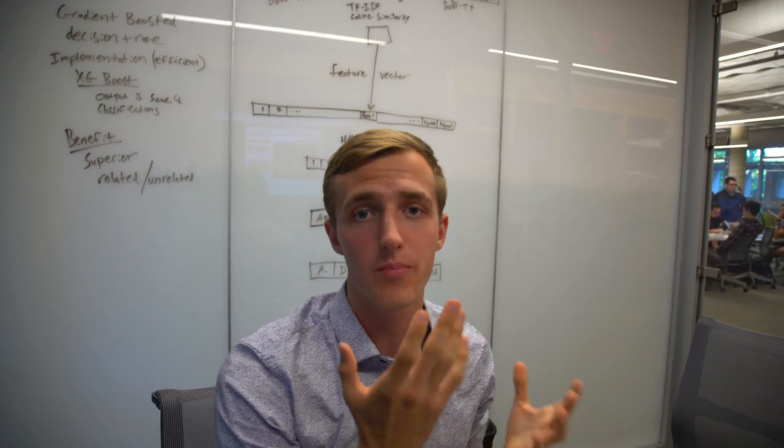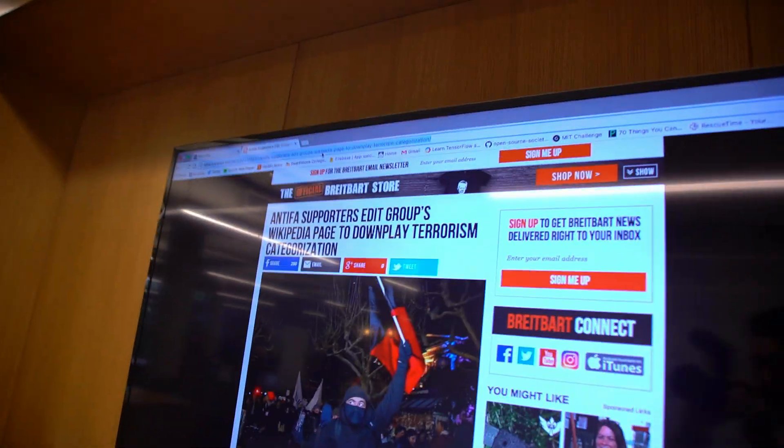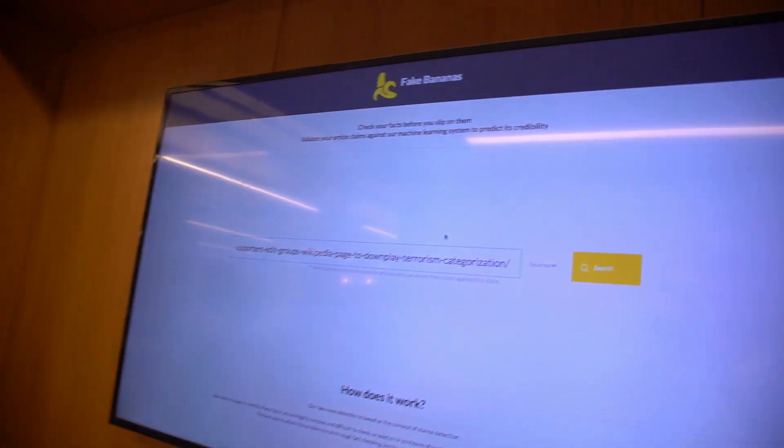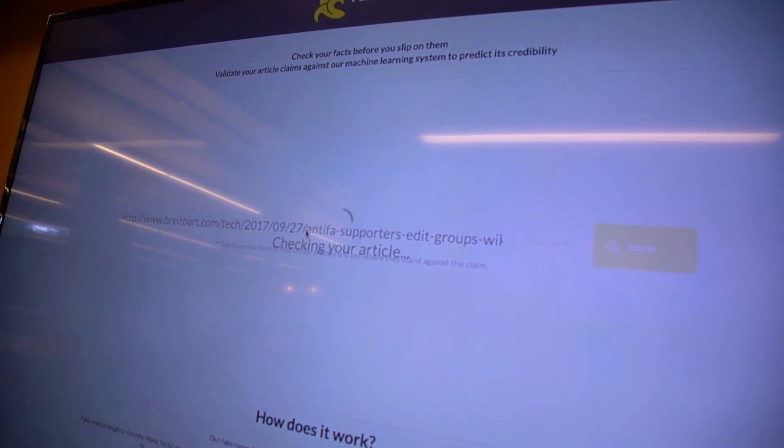Now let's show our product in action. If you look up at the screen, we have an article I know to be heavily biased against the truth about editing Wikipedia pages. We're going to copy the link, feed it into our web app, and it's going to extract all the relevant keywords in the body of the article.